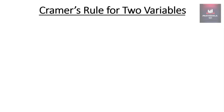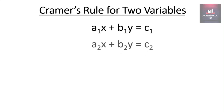Hello everyone, my name is Amrit and in this video we are going to learn Cramer's rule for two variables. Consider two equations: a1x + b1y = c1 and a2x + b2y = c2. If you want to find the values of x and y, we can solve this using simultaneous equations or by Cramer's rule. In this video we are going to learn Cramer's rule.